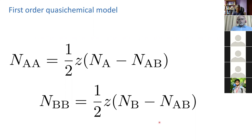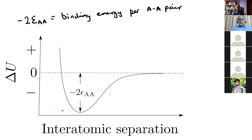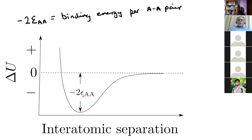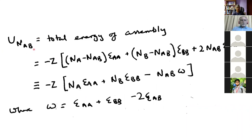As a reminder, we have a binding energy between atoms defined as follows. If I take two A atoms far apart and bring them close together, I get a curve where they initially attract and then repel as the electron clouds interfere. The binding energy is defined as minus two times epsilon_AA. The goal is to work out the enthalpy change — or internal energy change — when we make a mixture of A and B atoms.